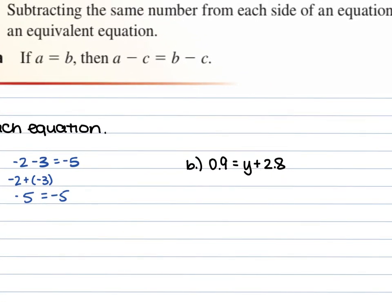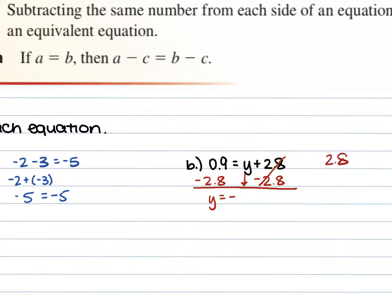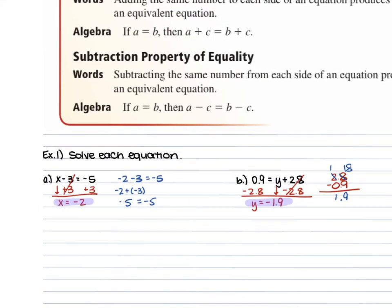For B, we have 0.9 is equal to y plus 2.8. We can get y by itself by subtracting 2.8 from each side. We have opposite signs, so our y comes down and we have negative 2.8 and 0.9. We keep the sign in front of the larger number and subtract. The larger number is 2.8, the sign is negative, so our answer is negative. We do 2.8 minus 0.9: the 8 turns into 18, so 18 minus 9 is 9, the 2 turns into 1, drop the decimal — so y is equal to negative 1.9. If you plug that back into the original equation and simplify, you should get a true statement.